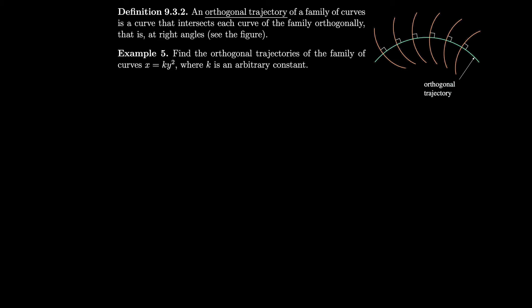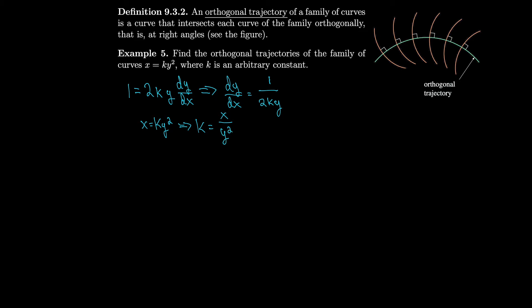First, let's find the slopes of all tangent lines to the curves in the family. Given x equals k times y squared, we take derivatives of both sides: differentiating x gives 1, and differentiating k y squared using implicit differentiation gives 2ky times dy/dx. Solving for dy/dx gives dy/dx equals 1 over 2ky. Since x equals k y squared, we can solve for k: k equals x over y squared.